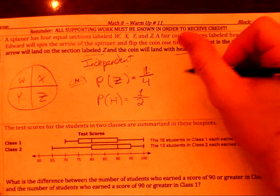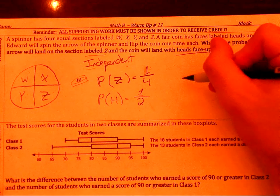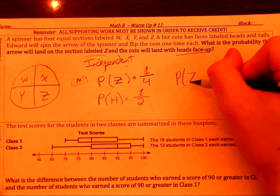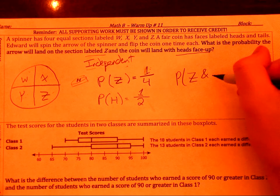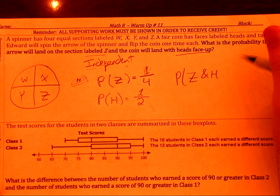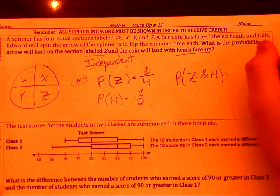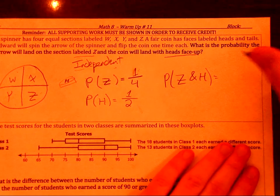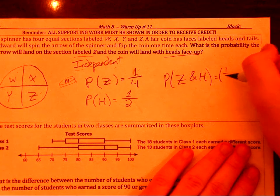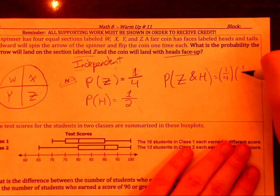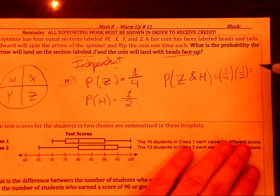So now, last step, make sure you multiply them together. So we're going to say it's the probability of landing on a Z and getting the coin with the heads face up. So it's going to be, let's do it here. It's going to be the first fraction, one-fourth, times the second fraction, one-half, which equals one-eighth.